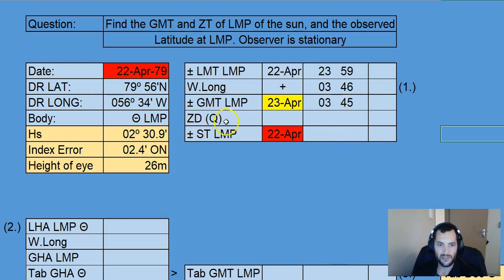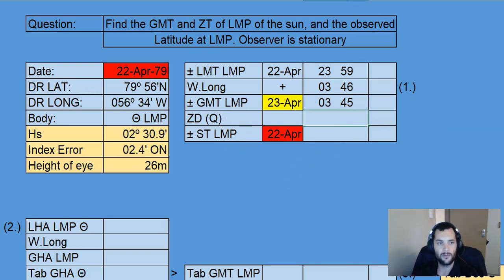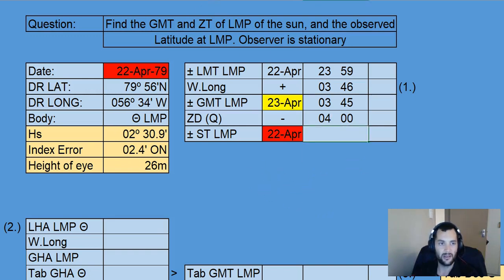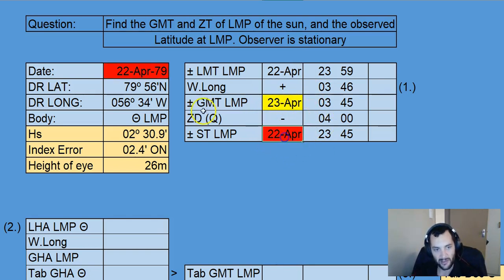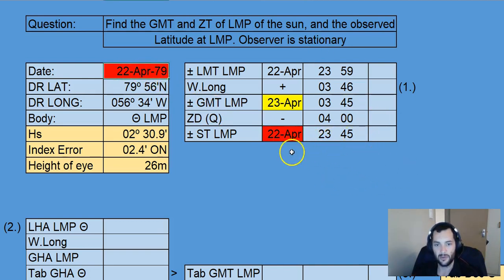Our zone is Quebec, so that means we will be subtracting 4 hours. We're going from Greenwich back to the ship, back into the western hemisphere — minus 4 hours. That then brings us back to the ship's time, which is the same date as what we wanted in the question. We always want to make sure, irrespective of what GMT is, that when we end up at ship time, the dates correlate. Which in this case is fine — so we've got 23:45 on the 22nd of April.